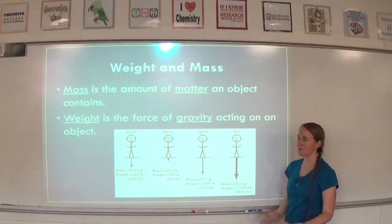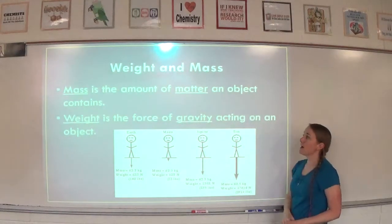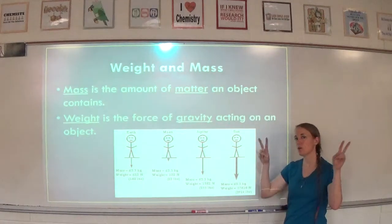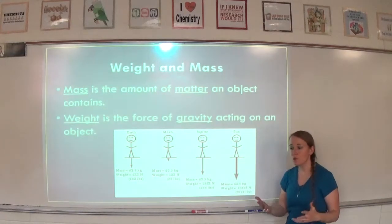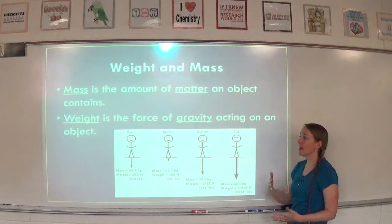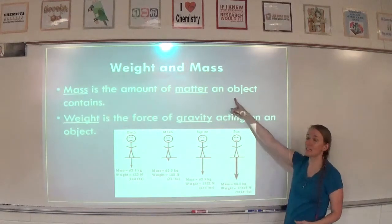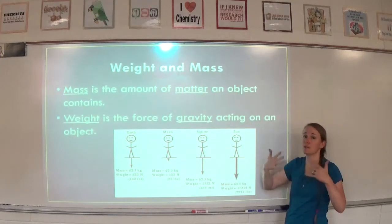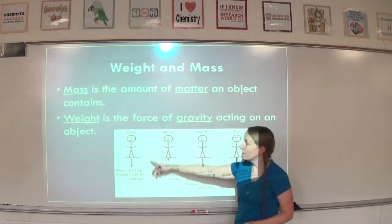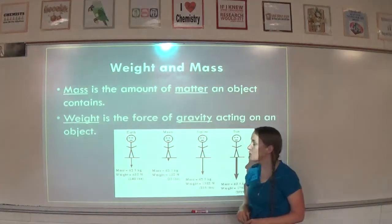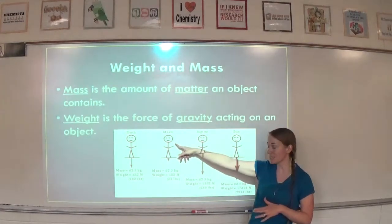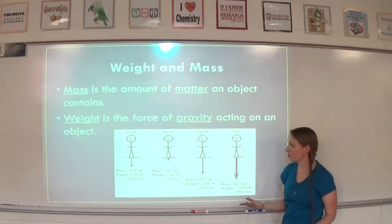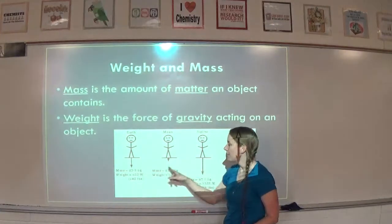Let's talk about the difference between weight and mass. Mass is the amount of matter an object contains. Weight is the force of gravity acting on an object. That's why when you go into outer space you are weightless, and when you go to the moon you feel like you weigh less — your mass remains the same, but because there's less gravity on the moon and no gravity in space, that's where the difference in weight comes from. On Earth a person may weigh 623 Newtons, but on the moon — which has about one-sixth the gravity — their weight is about 103 Newtons, while their mass stays 63.5 kilograms.